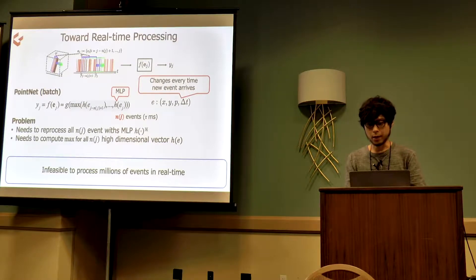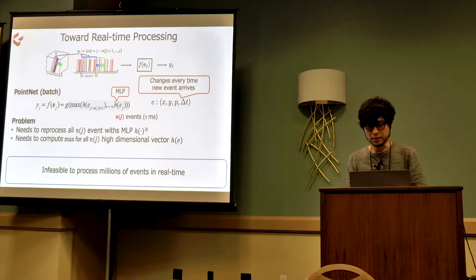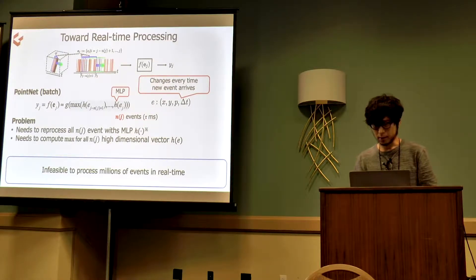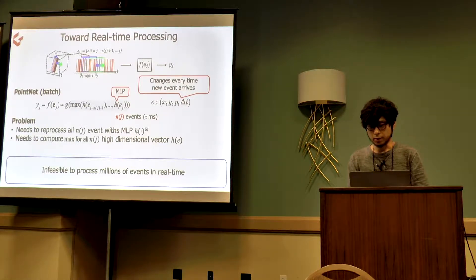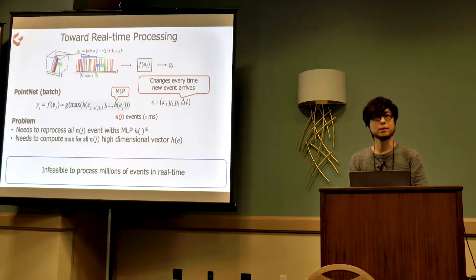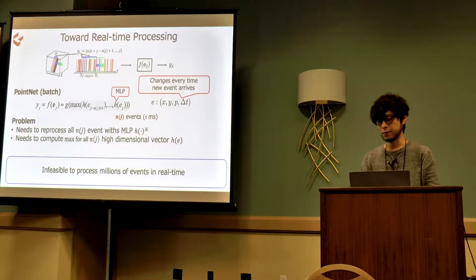PointNet can be applied to process event data as it can handle permutation of events. However, it was designed to process set of inputs in batch manner and cannot process sequential data recursively. When we use PointNet to process set of events, the input to the network will be x, y, p and delta t, where delta t is the last time of events relative to the newest event in the window. Therefore, delta t of the nj event changes as new events with newer timestamps arrive. This makes real-time processing infeasible.